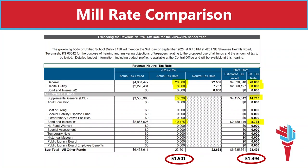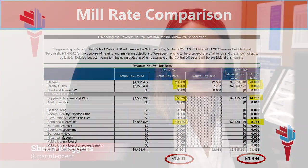The numbers I really want to highlight are the two circled at the bottom in red. If you total the third column, you get 51.501, which is the total mill rate for last year. If you total the far right column, you get 51.494, which is the mill rate adopted for this year. This reflects the .007 mill decrease mentioned previously.